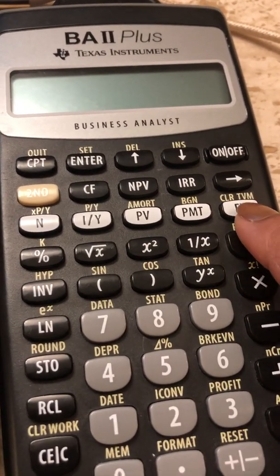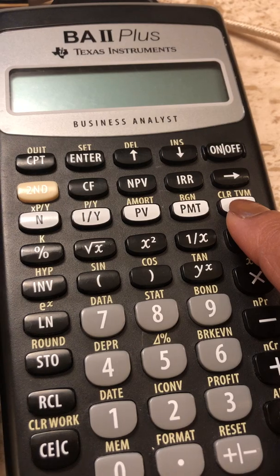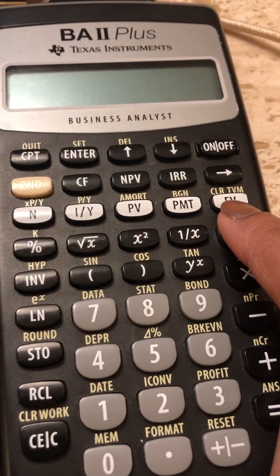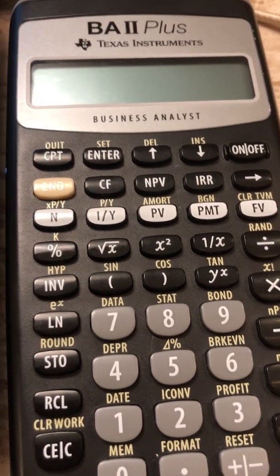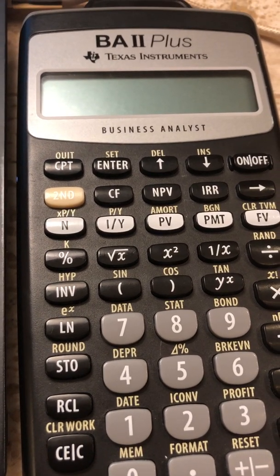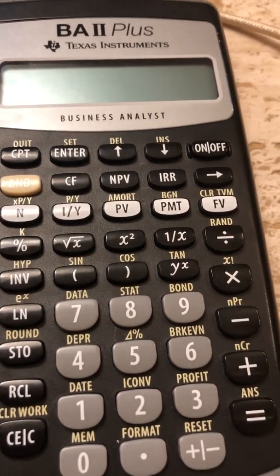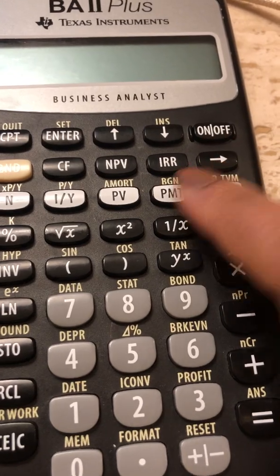And FV or the future value of zero, because at the end of 20 years, we intend to be left with no loans. We need to calculate or compute the PMT.